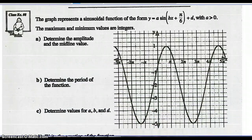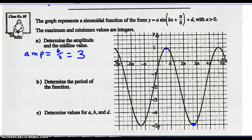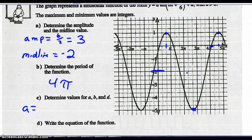Example 8: the maximum is 1 and the minimum is negative 5. The amplitude is half the distance from max to min: 6 divided by 2 equals 3. The midline value is 3 down from 1, which is negative 2. The period from high to high on the graph looks like 4π. So a is 3, b is 2π over 4π which equals one half, and d is negative 2.